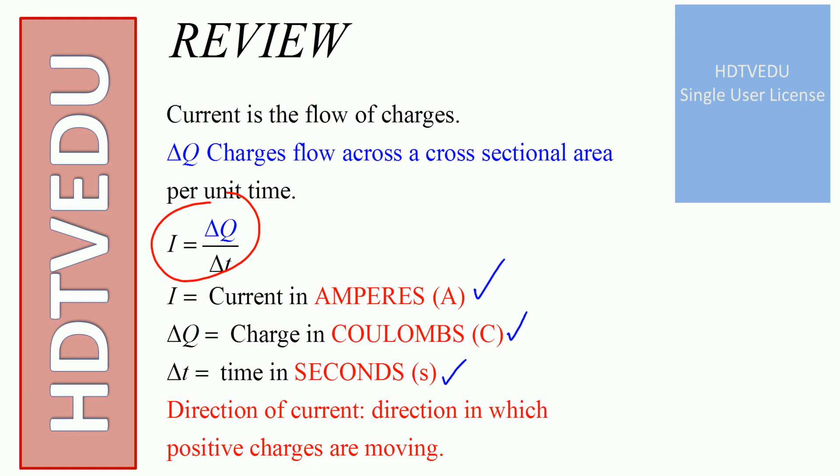Do not forget: current equals delta Q over delta t, and that is coulombs over second. Coulombs over second is what we define as an ampere. Direction of current is the direction in which positive charges move.